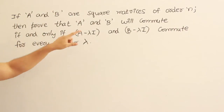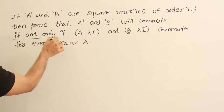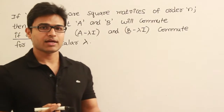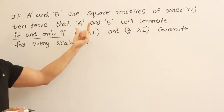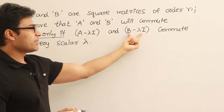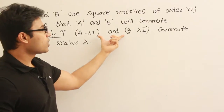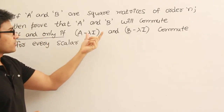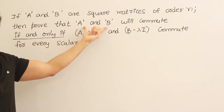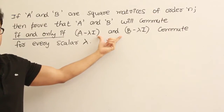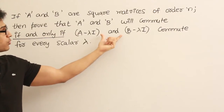We have to prove that A and B will commute if and only if. So it is not just given as 'if' — it is 'if and only if.' Whenever if and only if is given, we have to prove both the statement and the converse. So if A and B commute, we have to prove that A minus lambda I and B minus lambda I commute for every scalar. And the second step is: if A minus lambda I and B minus lambda I commute, we have to prove that A and B commute.